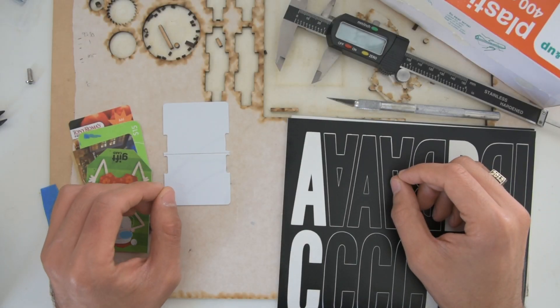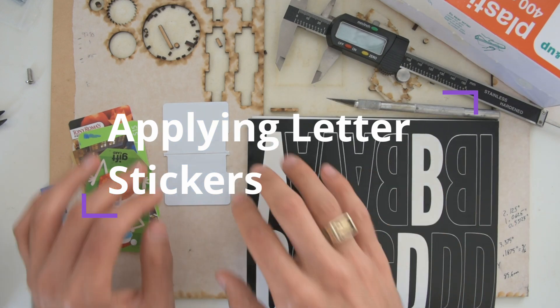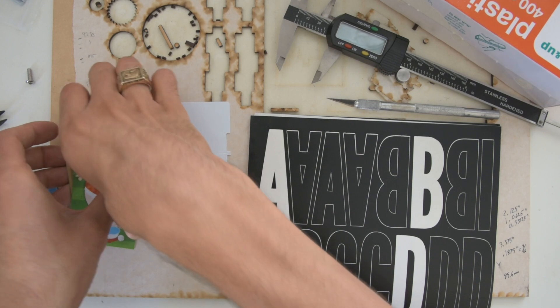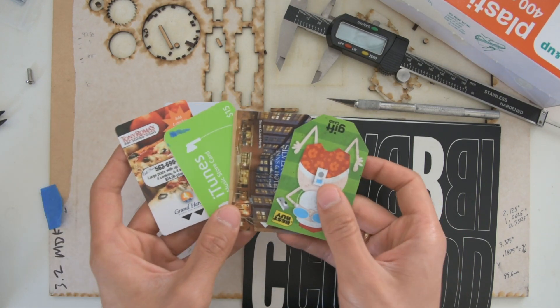All right, so this is a quick video explaining how to apply our letter stickers to split flaps. What we're going to need to do this is four old hotel key cards or gift cards.